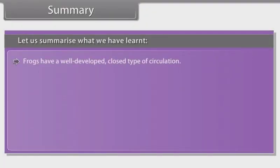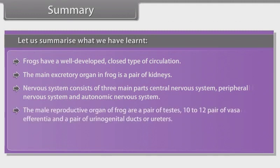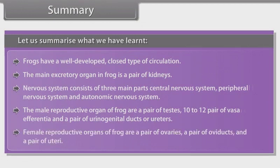Frogs have a well-developed closed type of circulation. The main excretory organ in frogs is a pair of kidneys. The nervous system consists of three main parts: central nervous system, peripheral nervous system and autonomic nervous system. The male reproductive organs of frog are a pair of testes, 10 to 12 pairs of vasa afferentia, and a pair of urogenital ducts or ureters. The female reproductive organs of frog are a pair of ovaries, a pair of oviducts and a pair of uteri.